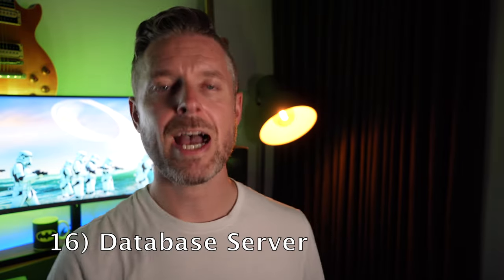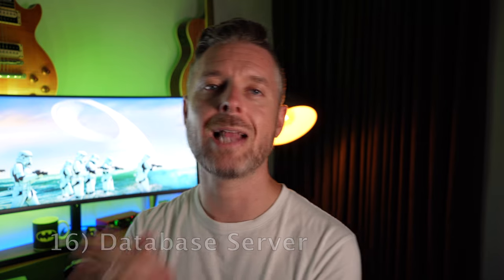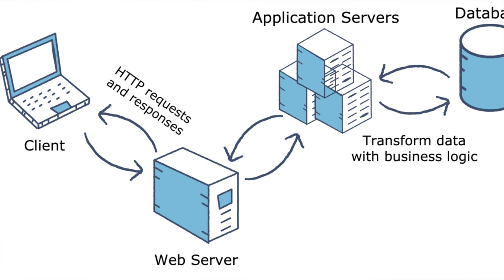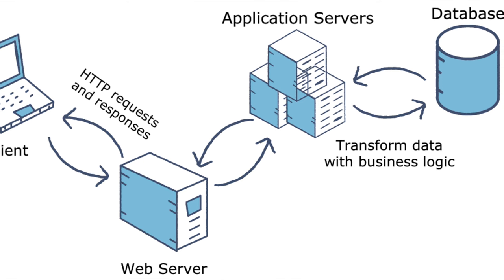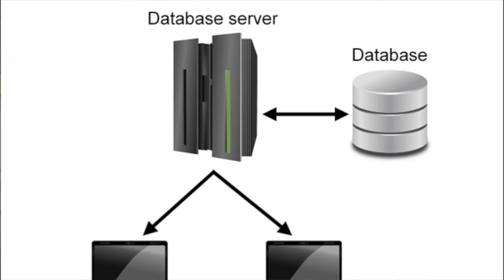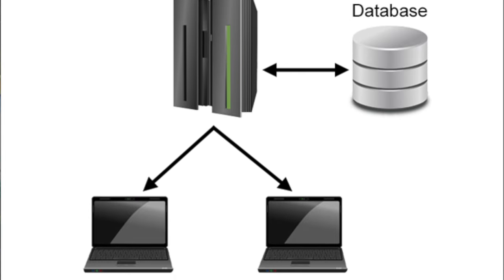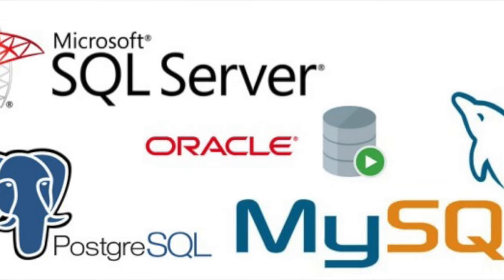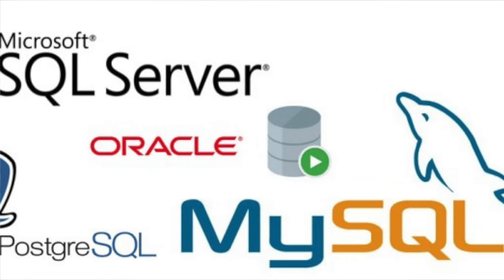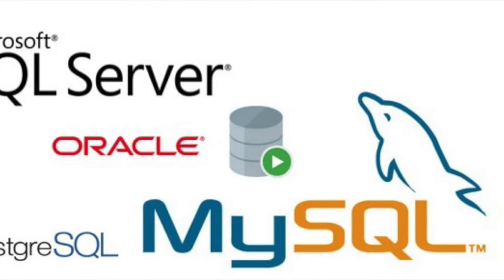Next is a database server. Database servers are one of those things you really need to know about because applications and web servers are all going to be talking to some sort of a database server. If you've deployed a big product in a company, chances are it's going to be storing stuff in some sort of a database. There are the big guys — Microsoft SQL and Oracle — but you can also try MySQL for free. Rather than having WordPress install its own database on the same server, why not have WordPress talking to a different dedicated database server, getting that connection between the web and the database on two different boxes.